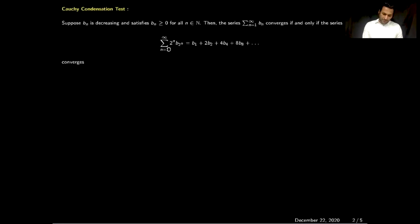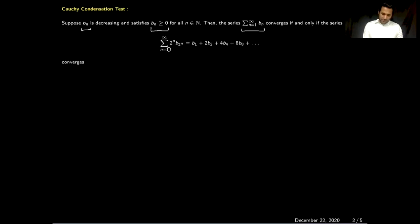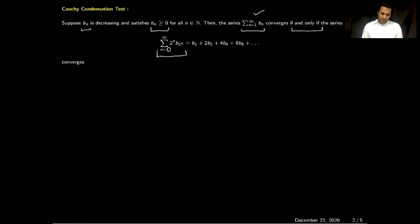This test states that if you have a series B_n where the sequence B_n is a decreasing sequence and each term is also positive, then this series and the series 2^n * B_{2^n} both converge and diverge together. This is an if-and-only-if statement: if the series summation from n=1 to infinity of B_n converges, then the series 2^n * B_{2^n} also converges, and vice versa.